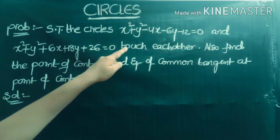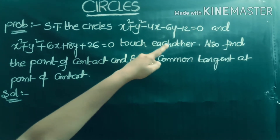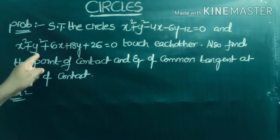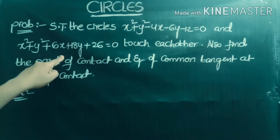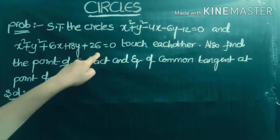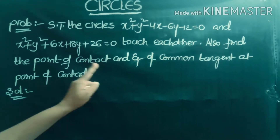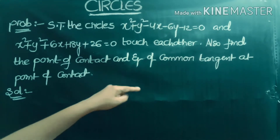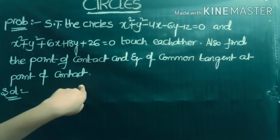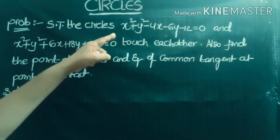Show that the circles x² + y² - 4x - 6y - 12 = 0 and x² + y² + 6x + 18y + 26 = 0 touch each other, and also find the point of contact and the equation of the common tangent at the point of contact.